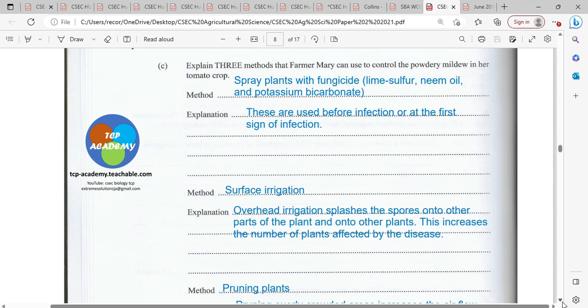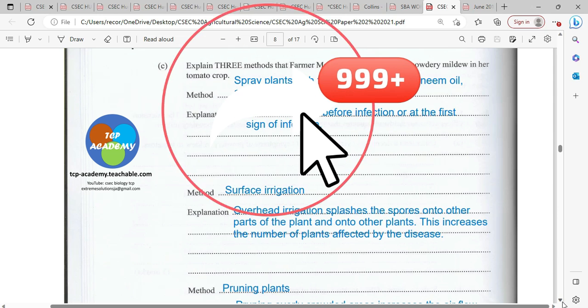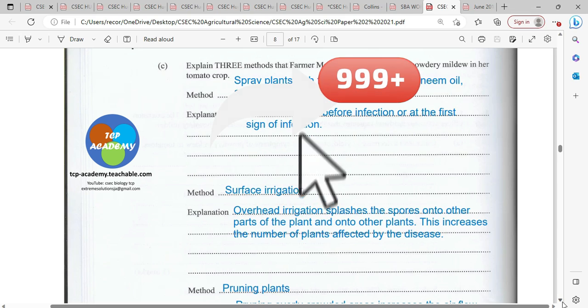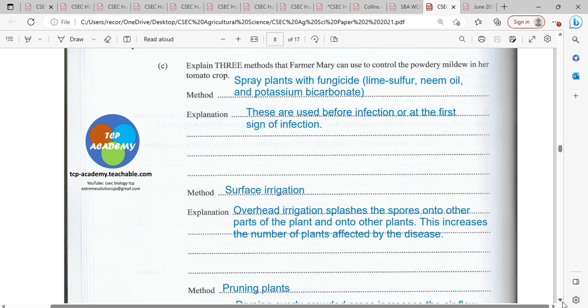Let's explain three methods that farmer Mary can use to control powdery mildew in her tomato crop. Method: Spray plants with fungicide (lime-sulfur, neem oil, and potassium bicarbonate). Explanation: These are used before infection or at the first sign of infection.